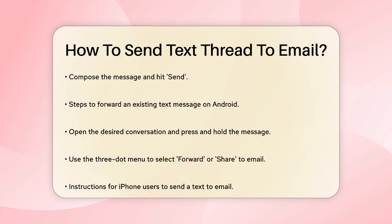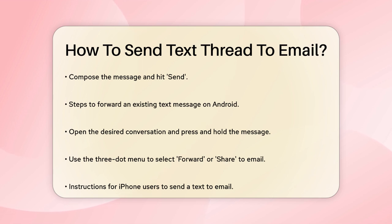Compose your message as you normally would and hit the Send button. If you need to forward an existing text message to an email, open the Messages app and select the conversation with the message you want to forward. Press and hold on the specific message until it changes color, then select the three-dot menu in the top right corner and choose Forward or Share. You can use the Share option to send the message via an email app like Gmail.